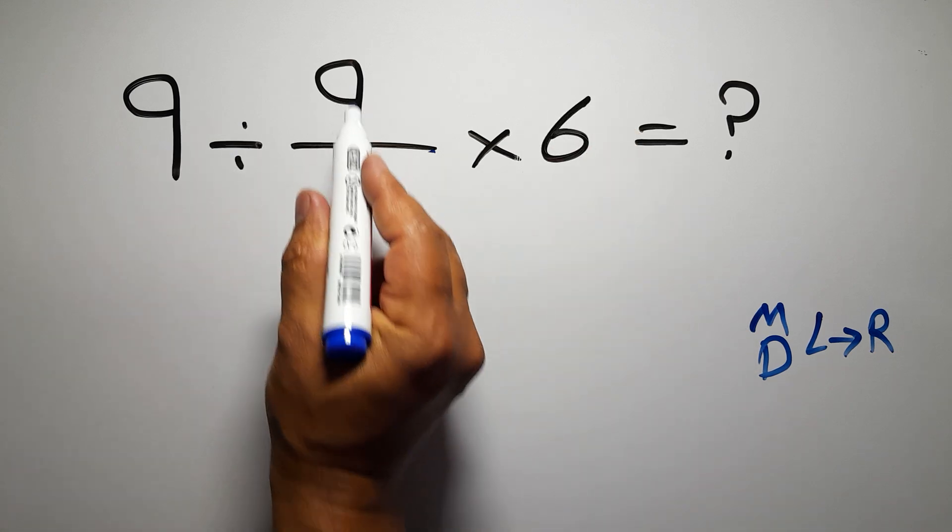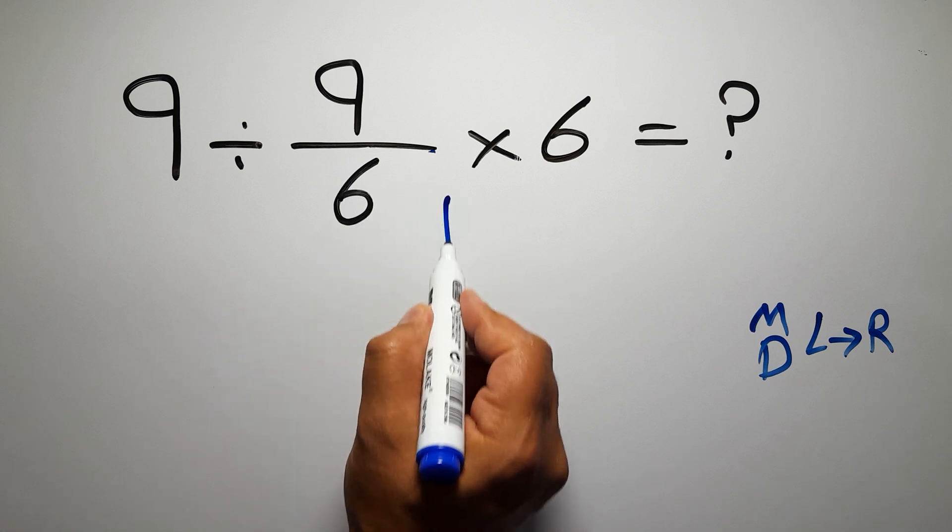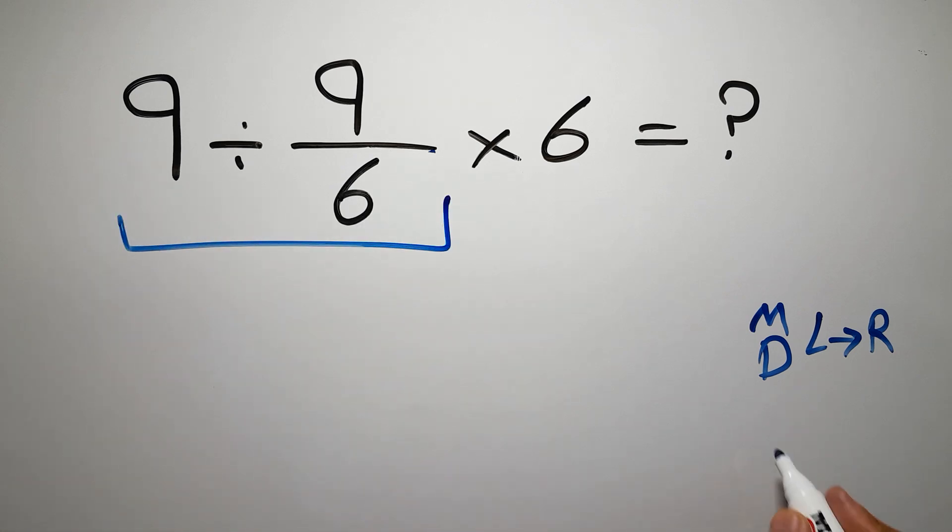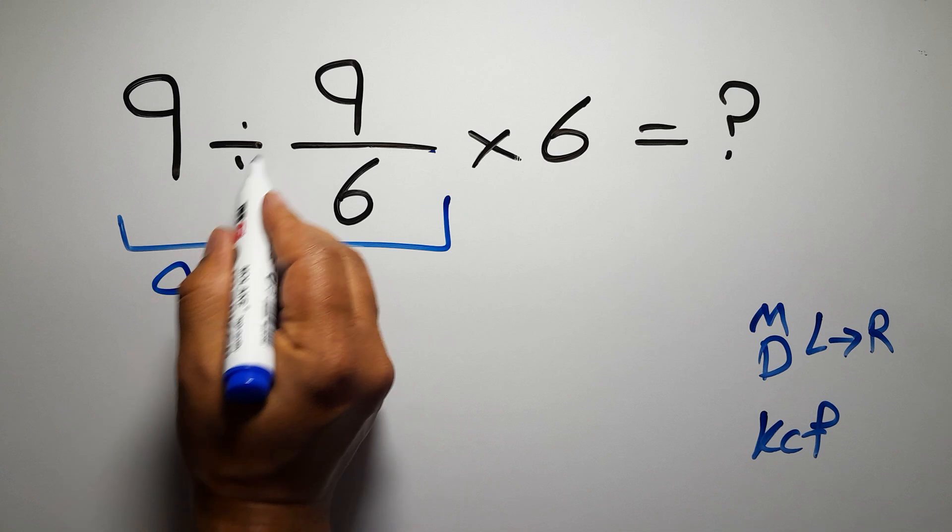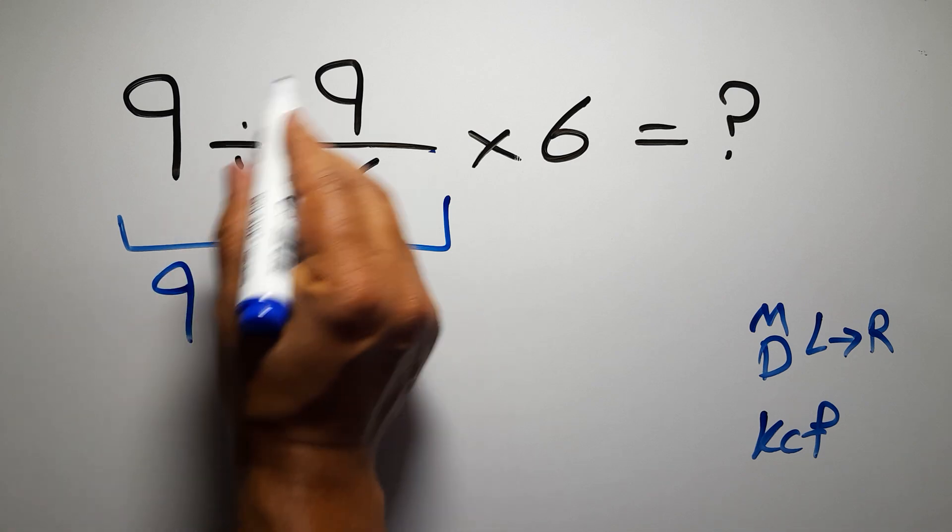So first, 9 divided by 9 over 6. According to the KCF rule: K stands for keep, C stands for change, and F stands for flip. We can write: keep the first fraction, change division to multiplication, and flip the second fraction.